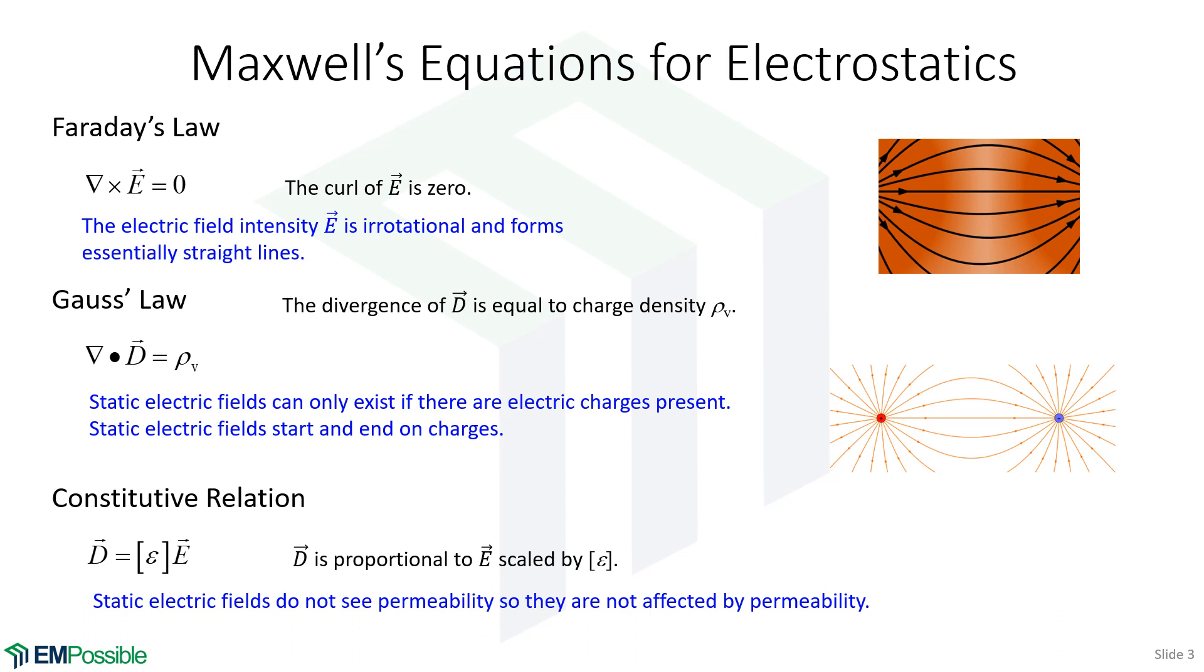The square brackets here implies that this can also be an anisotropic term. And if you remember our discussion there, that means that the electric flux can actually be in a different direction than the electric field intensity. For this course, we're really just going to treat permittivity as a scalar quantity. And so D and E will be in the same direction. But in general, that's not true.